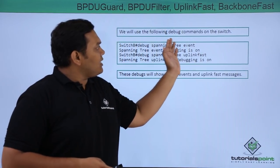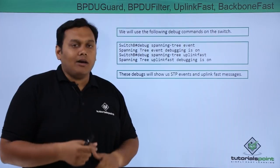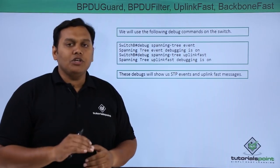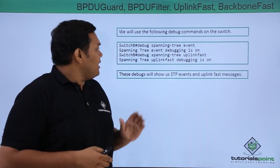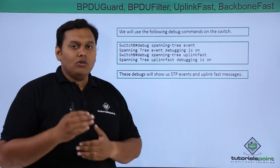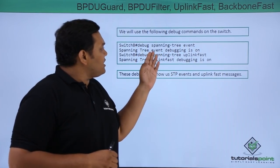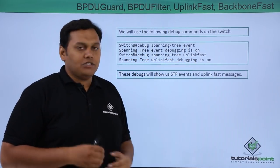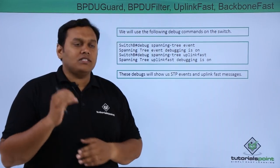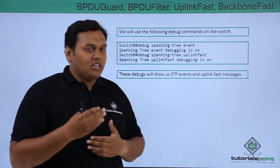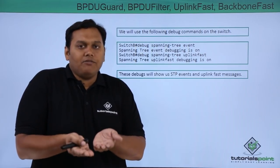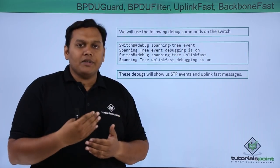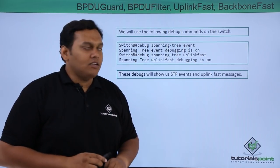We use the following debug commands on the switch to bring uplink fast up. For switch B, we use 'debug spanning-tree events' — spanning tree event debugging is now on. We also use 'debug spanning-tree uplink fast' to enable uplink fast to an on state. This debug will show STP events and uplink fast messages on the CLI interface.